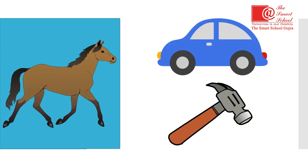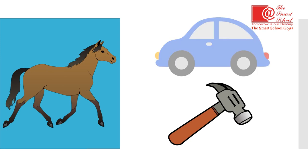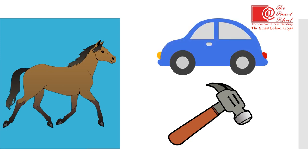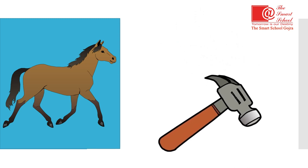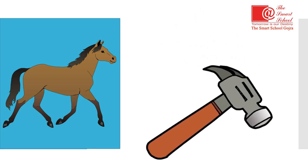Horse — now choose the picture of the same beginning sound: car or hammer? Right — hammer. H-horse, H-hammer — both begin with the same sound.